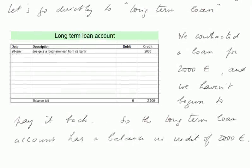Moving to the long-term loan account. We contracted the loan for 2,000 euros and we haven't begun to pay it back. So the long-term loan account has a balance in credit of 2,000 euros — a record of the money we received from the bank in the form of a long-term loan. It's a liability, a credit to that bank, which may be the same as or different from our bank managing our checking account.